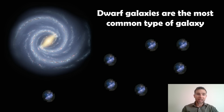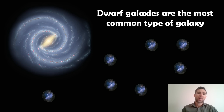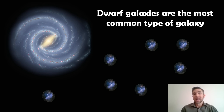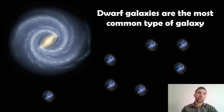Dwarf galaxies are actually some of the most common types of galaxies in the universe — there are more of these than any other sort of galaxy, probably due to their small size. Just like the most common types of stars are smaller dwarf stars like red dwarfs, the same is true for galaxies. Large galaxies like the Milky Way actually have satellite dwarf galaxies, similar to a planet having moons — you end up with more dwarf galaxies than larger ones.